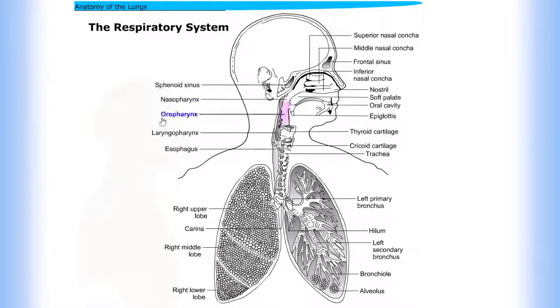Nasopharynx, oropharynx, laryngopharynx, esophagus, right upper lobe, carina, right middle lobe, right lower lobe, left primary bronchus, hilum, left secondary bronchus, bronchiole, alveolus.